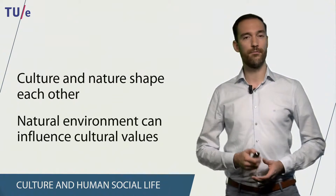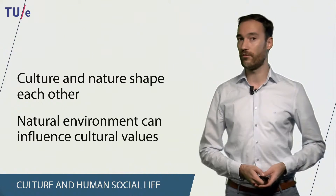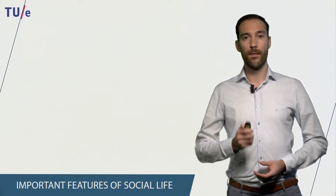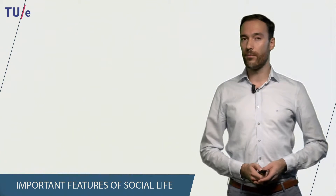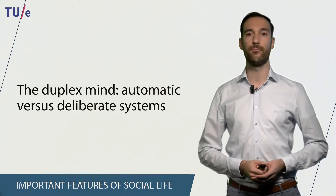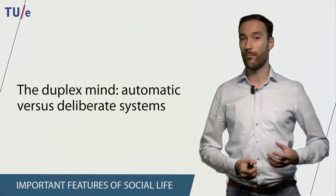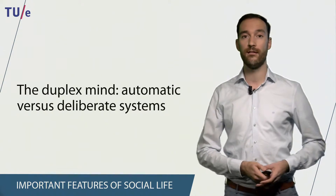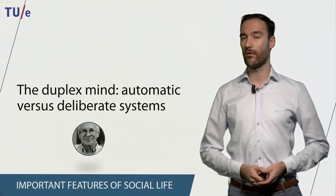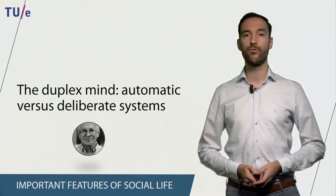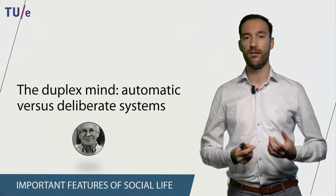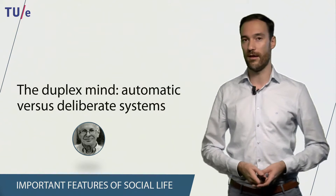Could you maybe think of a few other ways in which nature and culture influence each other? The most important difference between culture and nature is that we as humans have a duplex mind. This means that our brain has an automatic and a deliberate system. This idea was first coined by Daniel Kahneman, who referred to these two systems as system 1 and system 2. The most important thing is that we have a duality in our brain.